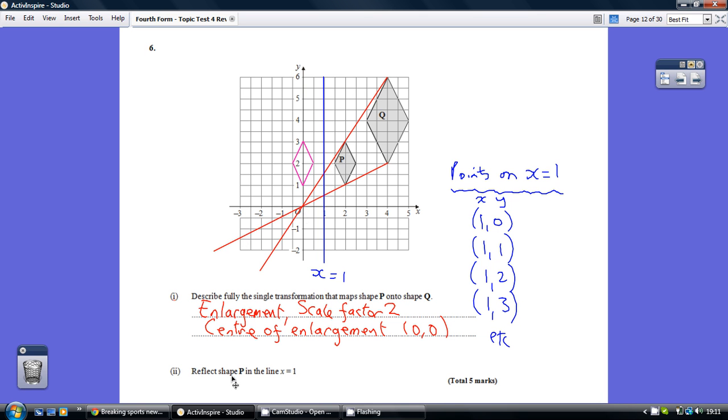Now, for part 2, the only tricky bit really is getting the mirror line correct. The mirror line is where x equals 1. Now, the temptation is to assume this line is across here, so parallel to the x-axis, but it isn't. The mirror line is this line here, x equaling 1, okay? Once you have the mirror line, it's a straightforward reflection, so 1 square away, 2 squares away, and so on.